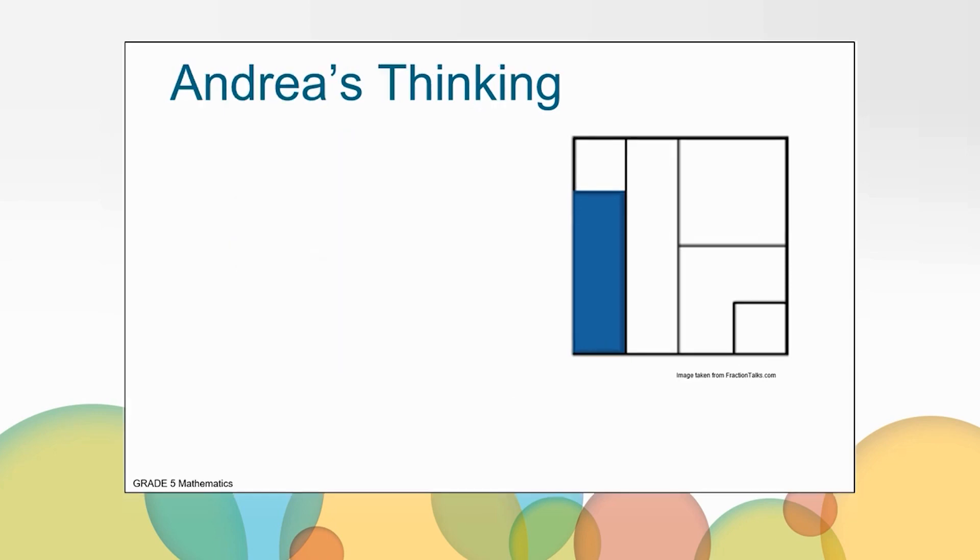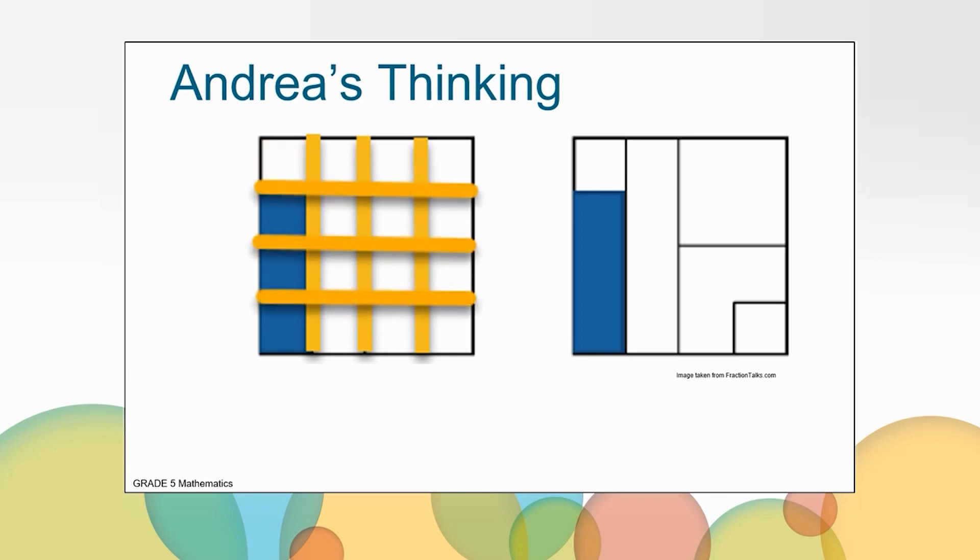Now we're going to look at how another student thought of their answer. Andrea began by cutting the entire square in half. Then she looked at the long vertical section to the left of the yellow half mark, and it made her think of cutting the square into fourths vertically. She thought to herself that she still needed to know what this white piece was. So, she decided to then break the square into horizontal lines. Now she's able to see that the 16 squares and the three sixteenths that are shaded blue. Is this the way you thought of your answer?